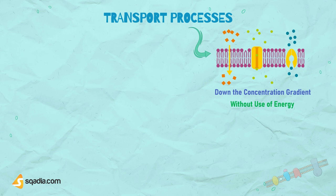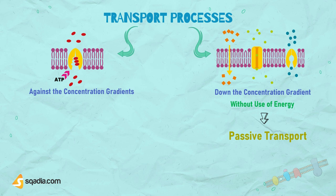But what happens when molecules need to move against the flow, from a low concentration to a high concentration? This uphill movement, much like pushing against a strong current, requires energy, and is known as active transport.